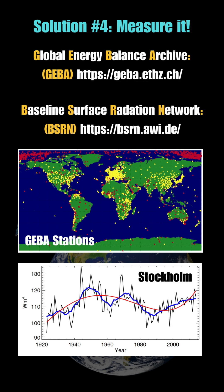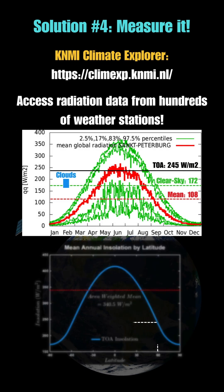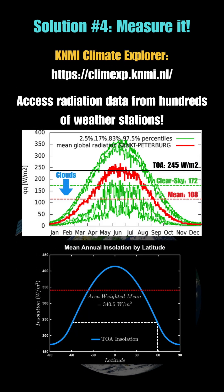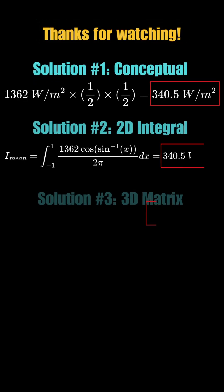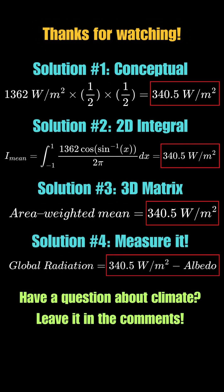You can access these data through CANA My Explorer. Using the example from St. Petersburg, you can see how clouds reduce top-of-the-atmosphere insolation, which we calculated last time. Now you know how it's done. Have a question about climate? Leave it in the comments.